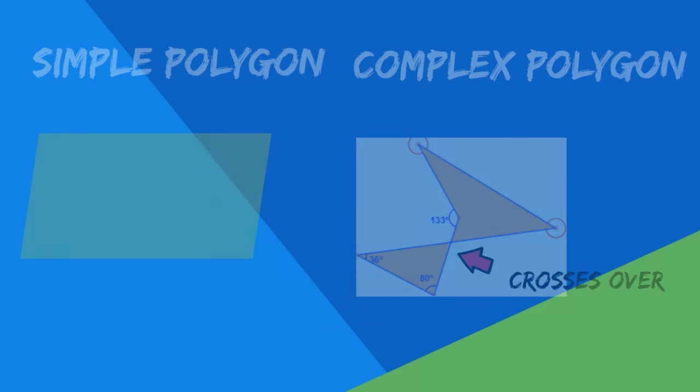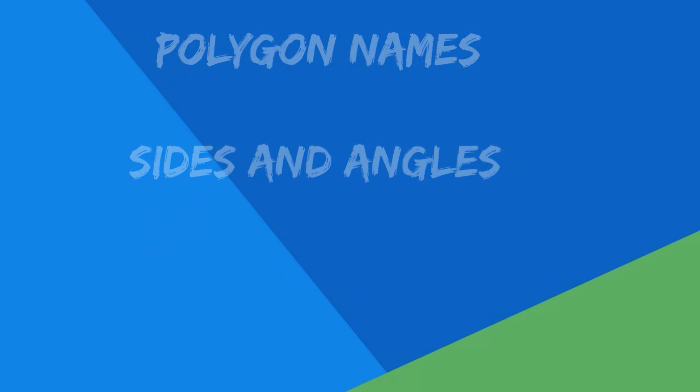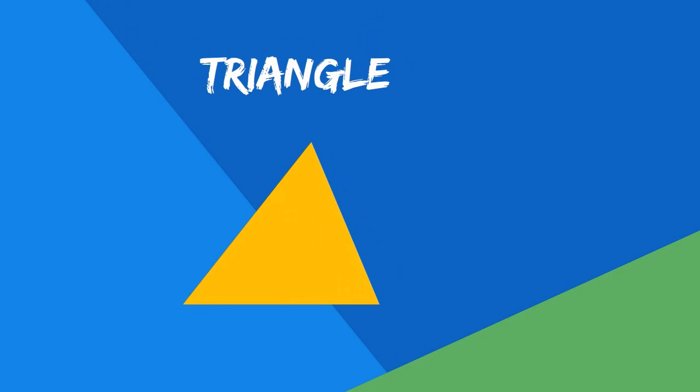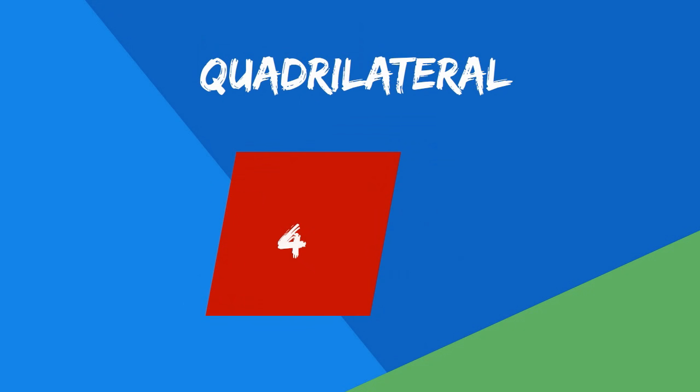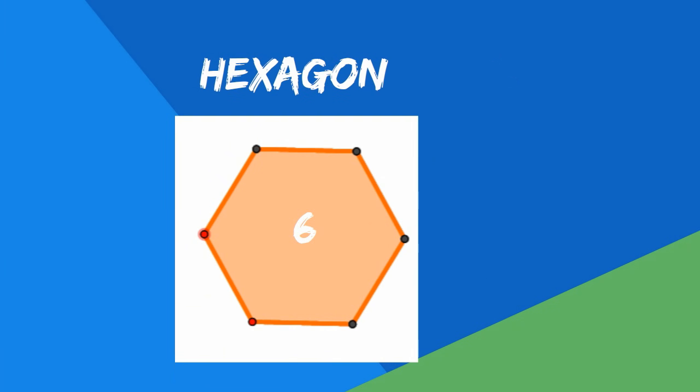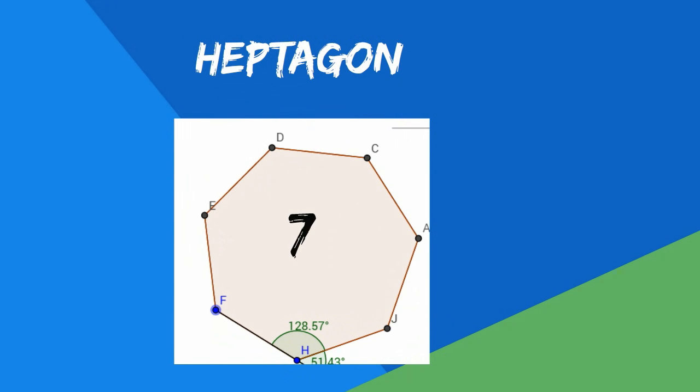Polygons are also named. They are named after the number of sides and angles. Here is a list of some of the common polygons. A triangle has three sides. A quadrilateral has four sides. A pentagon has five. A hexagon has six sides. A heptagon has seven sides.